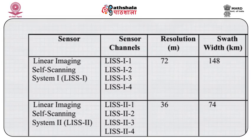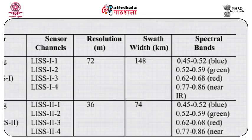Come to LISS 1. The sensor channels are LISS 1-1, LISS 1-2, LISS 1-3, LISS 1-4. The spatial resolution is 72 meters, swath width is 148 km, and spectral bands are 0.45–0.52 for blue, 0.52–0.59 green, 0.62–0.68 red, and 0.77–0.86 near IR.